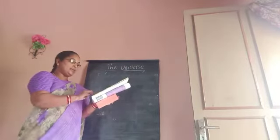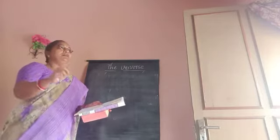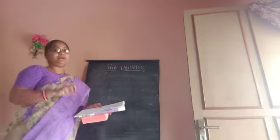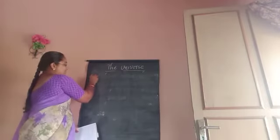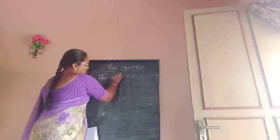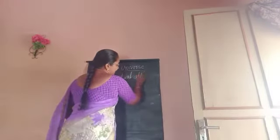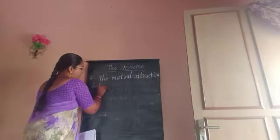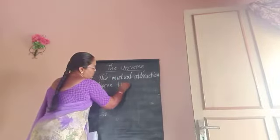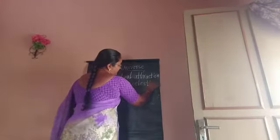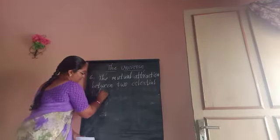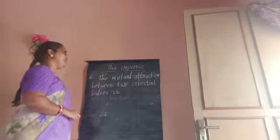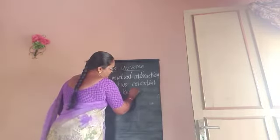Next, come to the sixth question: What is gravity, and how does it influence the revolution of celestial bodies? The mutual attractions between two celestial bodies is known as gravity.